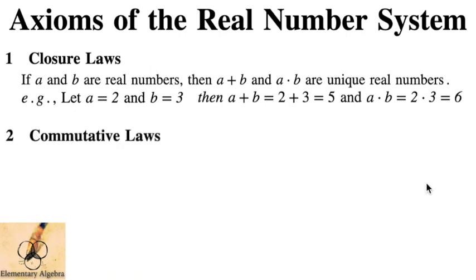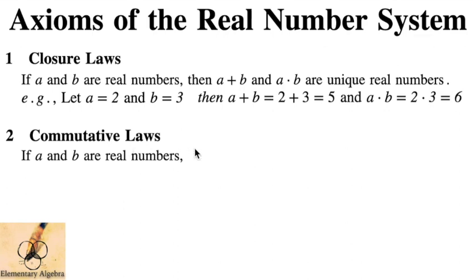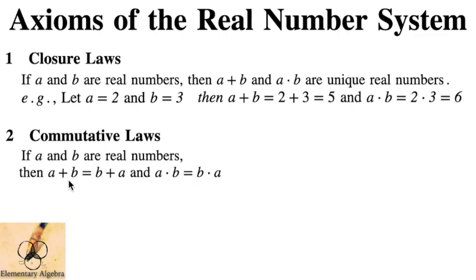Second, we have the commutative laws. This simply states that rearranging the addends or the factors will not change the sum or the product. We have the commutative law of addition and the commutative law of multiplication, but we don't really subdivide them since they have the same concept. If A and B are real numbers, then A plus B equals B plus A, and A times B equals B times A.